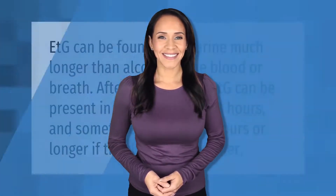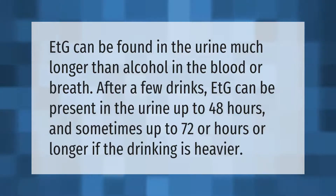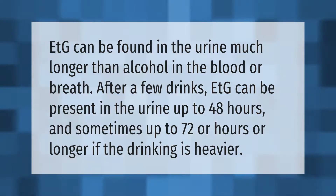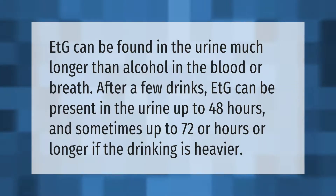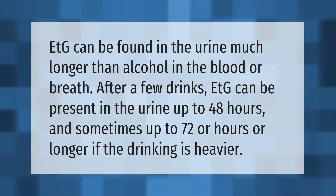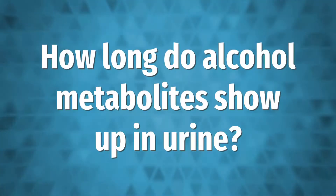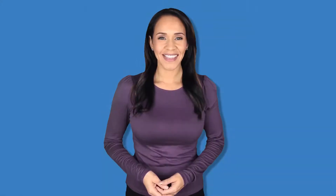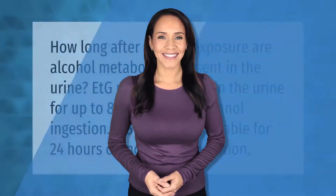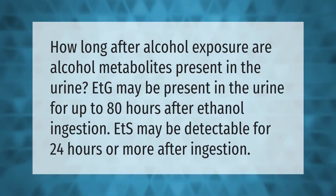EtG can be found in the urine much longer than alcohol in the blood or breath. After a few drinks, EtG can be present in the urine up to 48 hours, and sometimes up to 72 hours or longer if the drinking is heavier.